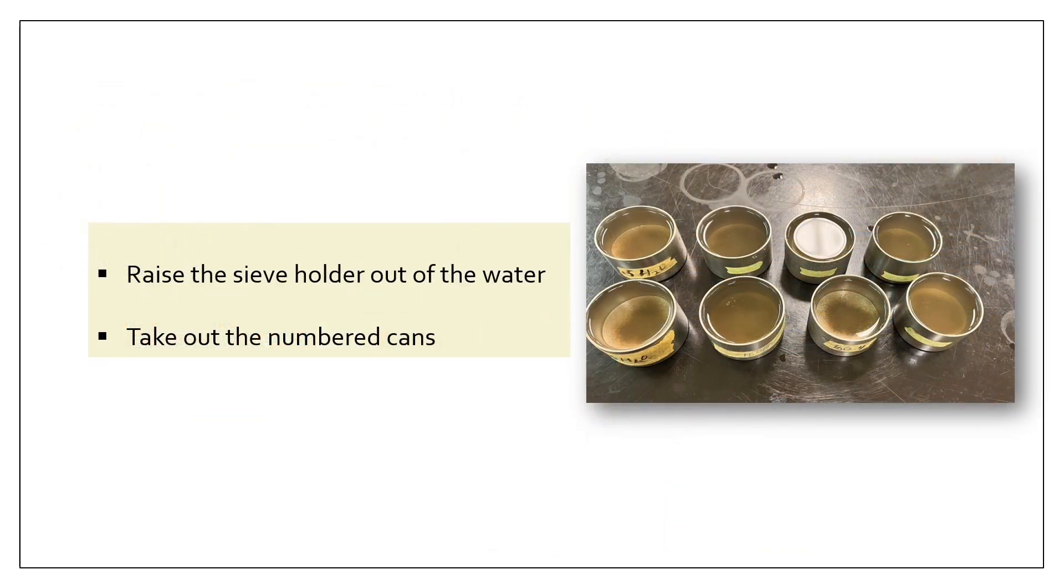After the motor stops, raise the sieve holder out of the water and place it in the leak out position by putting the sieve holder in the first hole of the shaft. When there is no water leaking out of the sieves, take out those cans. These cans now contain the water plus some aggregate fragments that passed through the sieves.